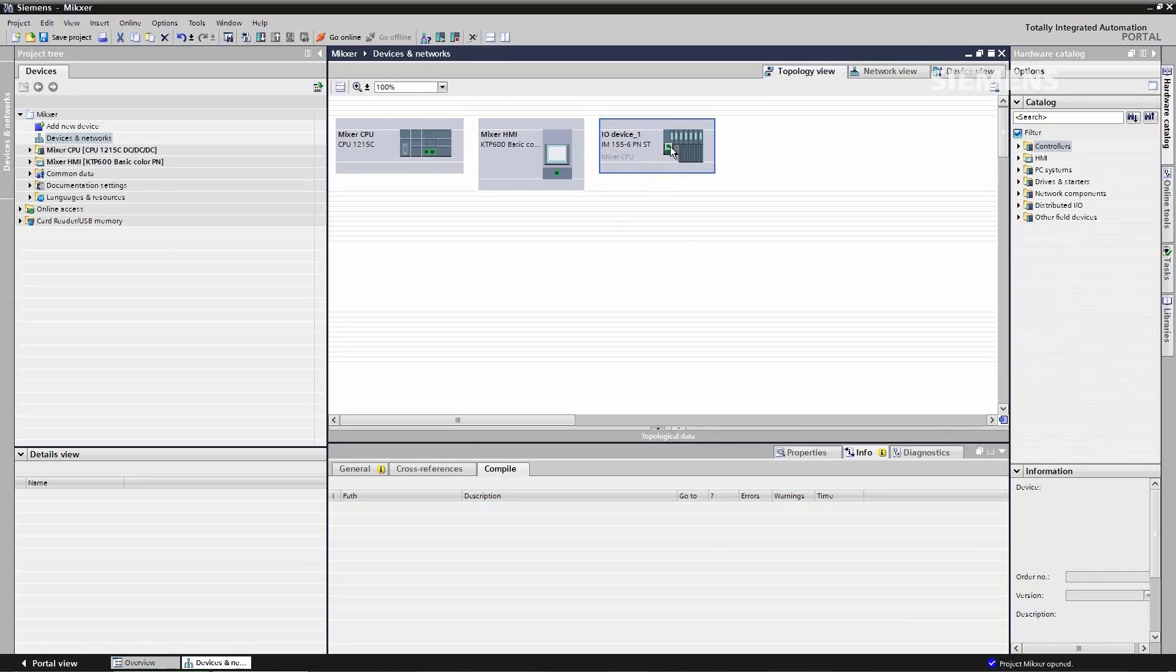Having done that, I'm now going to use the topology view and connect the system together. I highlight the actual ethernet port on the ET200SP that I'm physically connected and I drag across to the S71200 CPU also to the port that I'm physically connected.